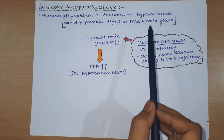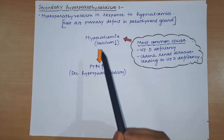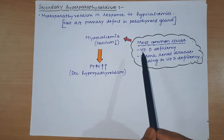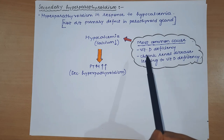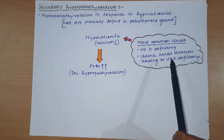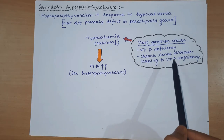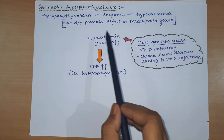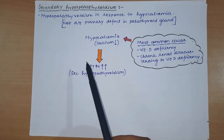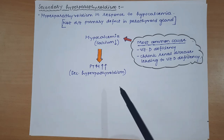Secondary hyperparathyroidism is not due to a primary defect in the parathyroid gland. The hypocalcemia that causes the increase in parathyroid hormone has common reasons - the most common being vitamin D deficiency. This can be a direct vitamin D deficiency, or it can be due to chronic renal failure, in which 25-hydroxycholecalciferol cannot be converted to 1,25-dihydroxycholecalciferol. When hypocalcemia develops, calcium sensing receptors in the parathyroid gland detect it and increase the release of parathyroid hormone, which then increases blood calcium levels.